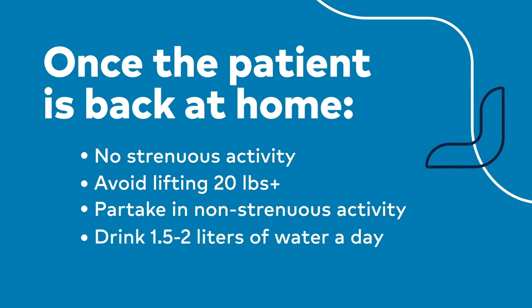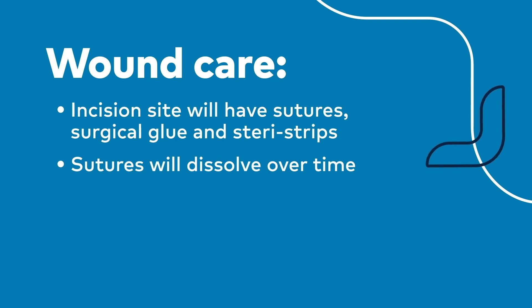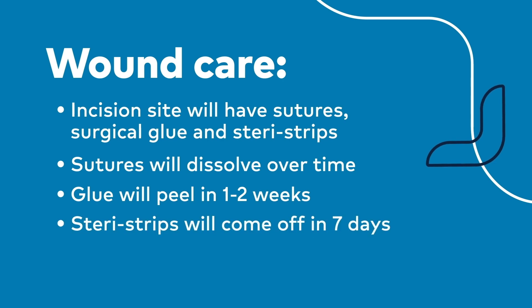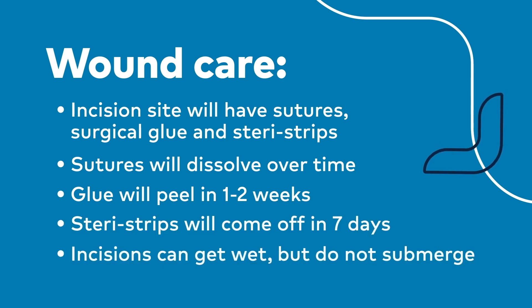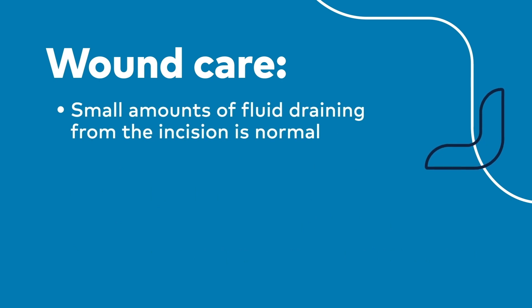Staying hydrated is also key. Drinking one and a half to two liters of water a day by small frequent sips is recommended. Wound care is very important once the patient is home. The surgical site will have incision sutures or stitches deep in the skin and surgical glue or Steri-Strips on top. The sutures dissolve over time, and the glue begins to peel one to two weeks after surgery. Steri-Strips will come off on their own in about seven days. It's safe to let the incisions get wet during a shower, but don't submerge them in water until they're completely healed. A small amount of yellow, pink, or clear fluid draining from the incision is normal.